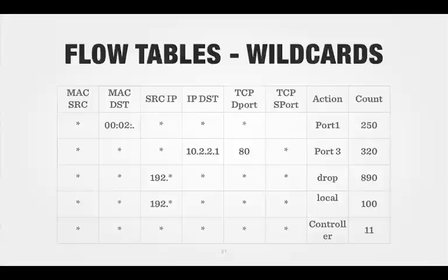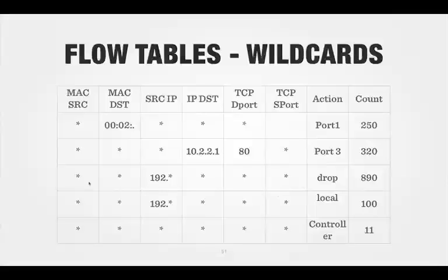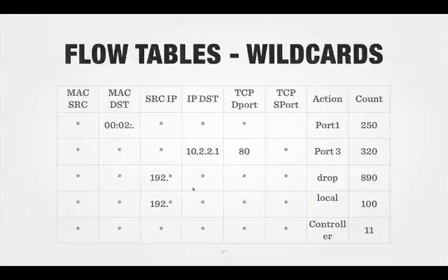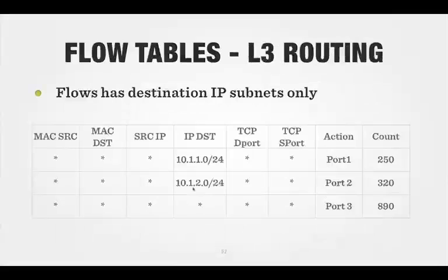In this particular table, for example, we're saying for any source MAC address with a MAC destination of 0002 in hexadecimal, just send that out port 1 — not a very practical rule, but you get the idea. In line 3, any MAC address, any source destination, for any source IP address, route it to 10.2.2.1. For any Ethernet, from any source, if you're sending to 10.2.2.1 on port 80, forward out port 3. It's not necessary to fill out all fields — we just have wildcards, subnet masks, flow fields.